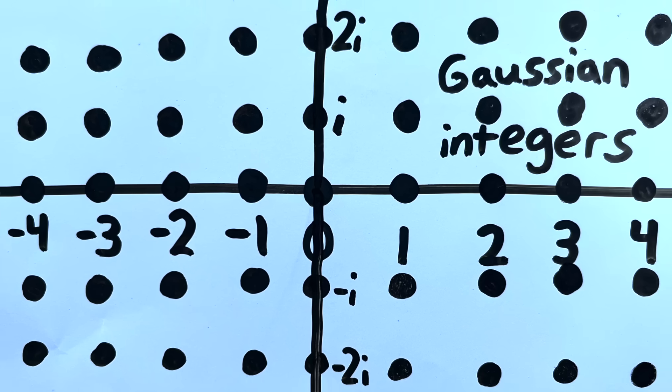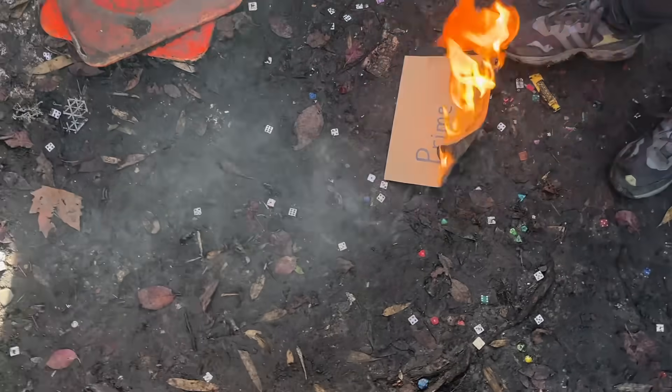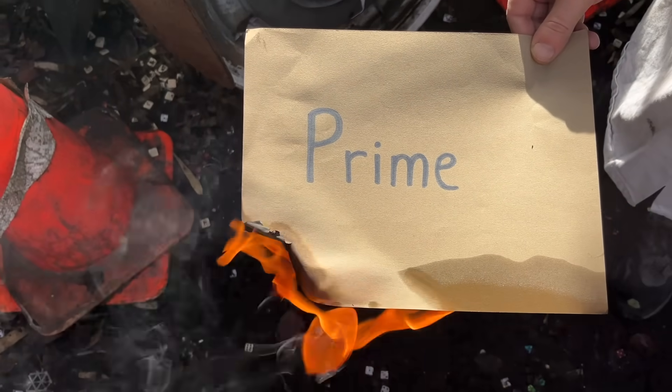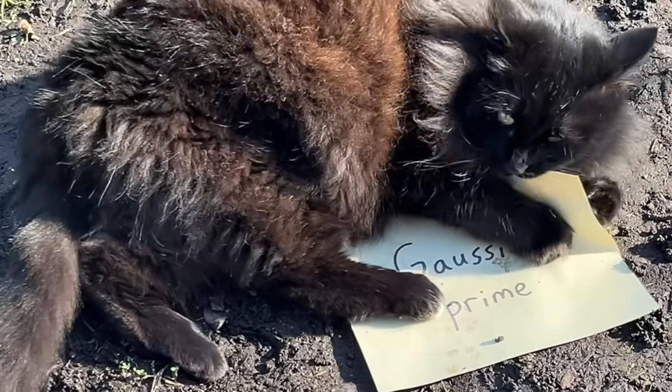these spots are known as the Gaussian integers. And the typical type of integers have the typical type of primes as a subset. So you may wonder if there are Gaussian integers, are there Gaussian primes?